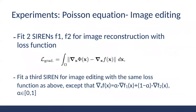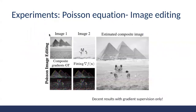The Poisson equation can also be used for image editing, in which we mix gradients of two target images to create a composite image. We supervise the network with the mixed gradient of the source implicit representations we want to mix. The result shows decent performance with gradient supervision only.